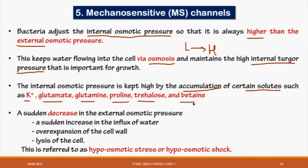The cell accumulates solutes to keep its internal solute concentration high. Examples of solutes it accumulates include K⁺, Glutamate, Glutamine, Proline, Trehalose, and Betaine. These molecules include ions, amino acids (Glutamine, Proline), a carbohydrate (Trehalose), and a vitamin molecule (Betaine). They accumulate so that internal concentration is a little higher than outside, and water will always flow from low to high concentration.